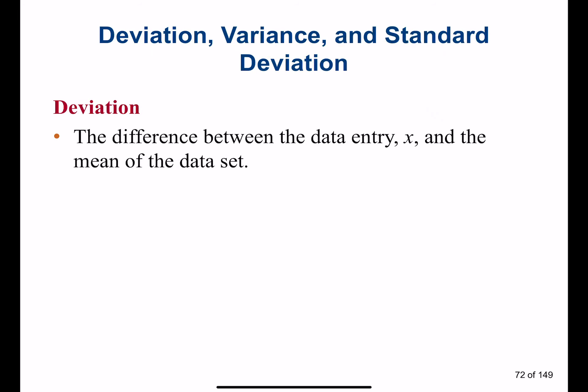Deviation is the difference between a data entry x and the mean of the data set — in other words, it's an error showing how far an element has drifted from the mean. If our data is centralized somewhere and the element of interest is on the edge, deviation tells you how much that element is drifted away from the central average.